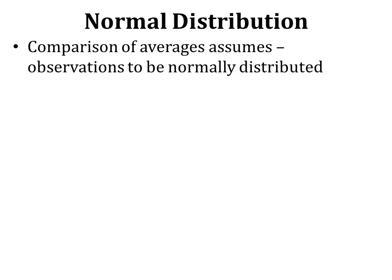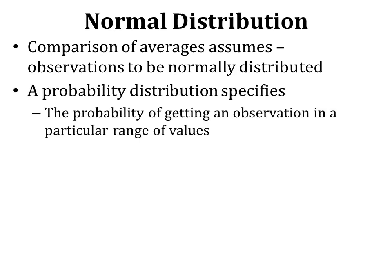Another concept essential to the comparison of averages is normal distribution. Most statistical tests used for comparing mean values assume that observations are normally distributed and follow a normal curve. A probability distribution specifies the probability of getting an observation in a particular range of values, and we can define this using the properties of the normal curve.